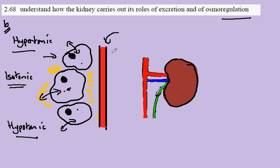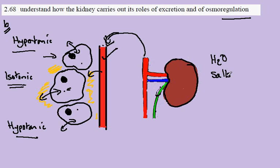This is achieved by controlling the composition of blood. Blood forms the tissue fluid, and it is the role of the kidney to control the composition of our blood. Blood which circulates through our kidney — excess water and excess salts can be removed and excreted down through the ureter here.